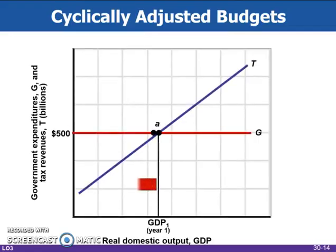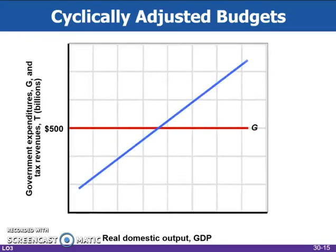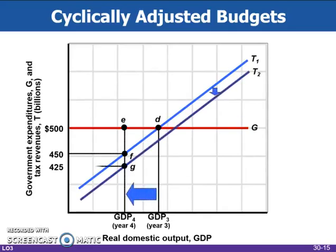This figure shows the cyclically adjusted deficits. The cyclically adjusted deficit is zero at the full employment output GDP one, but it is also zero at the recessionary output GDP two because the $500 billion of government expenditures at GDP two equals the $500 billion of tax revenues that would be forthcoming at the full employment GDP one — there has been no change in fiscal policy. In the next figure, discretionary fiscal policy as reflected in the downward shift of the tax line from T1 to T2 has increased the cyclically adjusted budget deficit from zero in year three to $25 billion in year four after the tax cut, found by comparing the $500 billion of government spending with the $475 billion of taxes that would accrue at full employment GDP three. Such a rise in the cyclically adjusted budget deficit as a percentage of potential GDP identifies an expansionary fiscal policy.